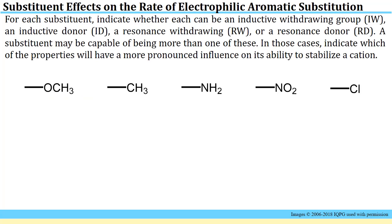The first problem in this video homework is to categorize each of these substituents by indicating whether each is capable of serving as an inductive withdrawing group, an inductive donor, a resonance withdrawing group, or a resonance donor. A substituent can fill two of these roles, and in such cases we have to indicate which property will have a more pronounced influence on its ability to stabilize a cation. To facilitate this task, we should draw out the Lewis structures of each of these substituents.